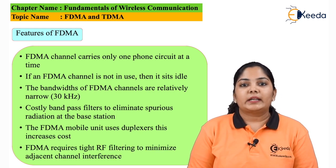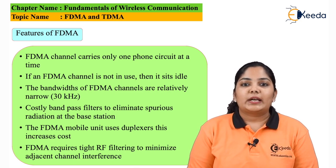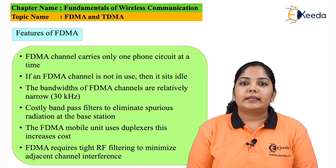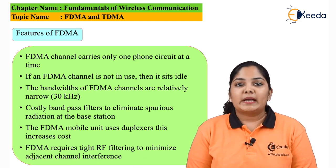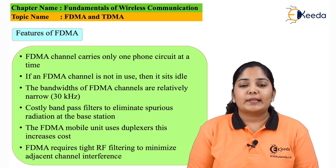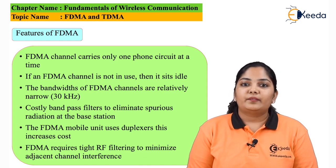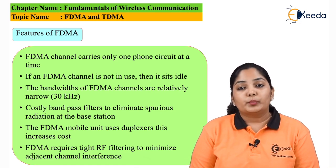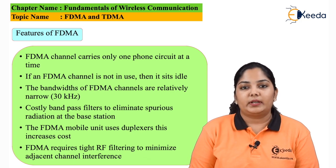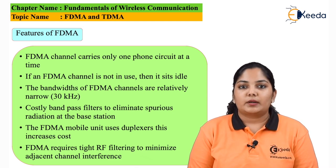RF filtering is required so that there is no adjacent channel interference. One channel is used for transmission and after a certain gap another channel is used for reception, while nearby channels are provided to other users. If the filtering is not done properly, other channels may cross-talk the channel being used by the user. Hence proper RF filtering is required. Because a single antenna is used at the base station and mobile station to transmit and receive simultaneously, costly duplexer circuits are also included for proper frequency separation.